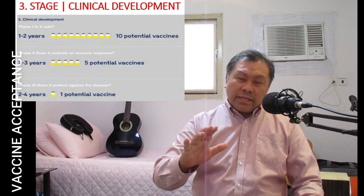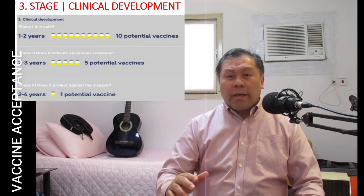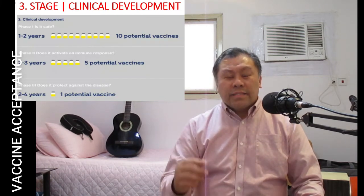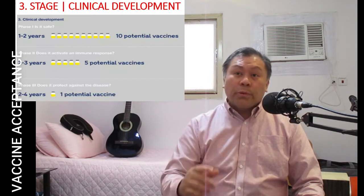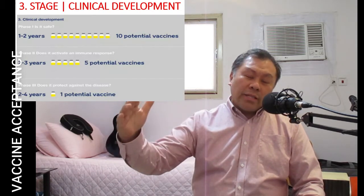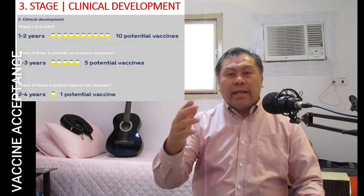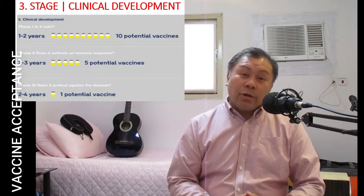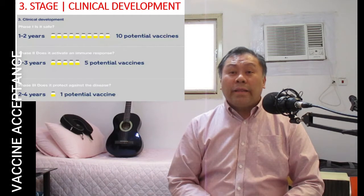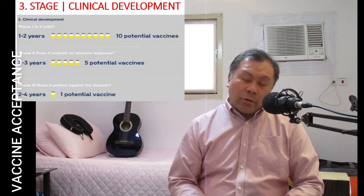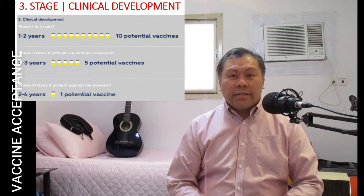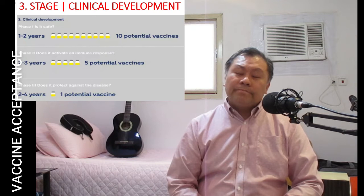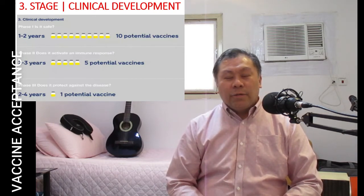The third stage is Clinical Development, which has three phases. Phase 1 asks the question: Is it safe? It takes one to two years and narrows down to about 15 potential vaccines. Phase 2 takes two to three years, narrowing to five potential vaccines, and asks: Does it activate an immune response when inoculated in the human body? Phase 3 takes two to four years and results in one potential vaccine.